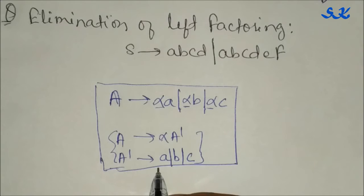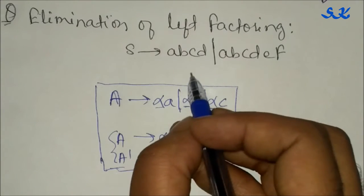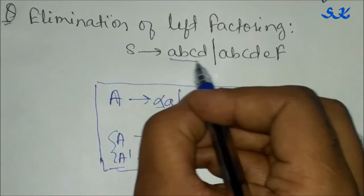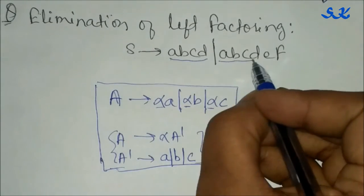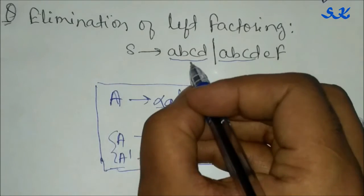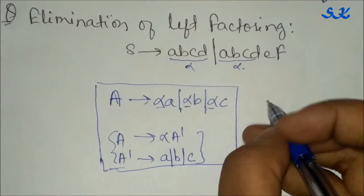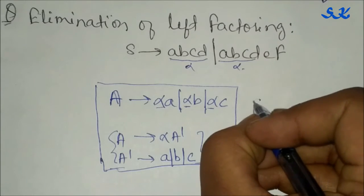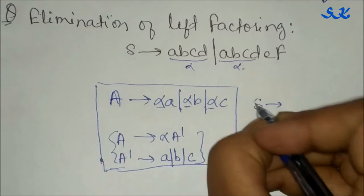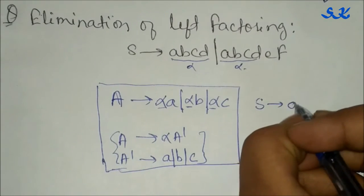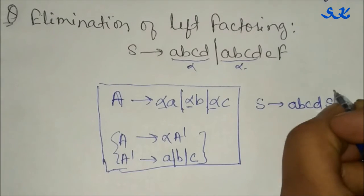Now our question is this: the common statement is abcd in both productions S → abcd and S → abcdef. This abcd is alpha. We write this statement as S → abcdS'.